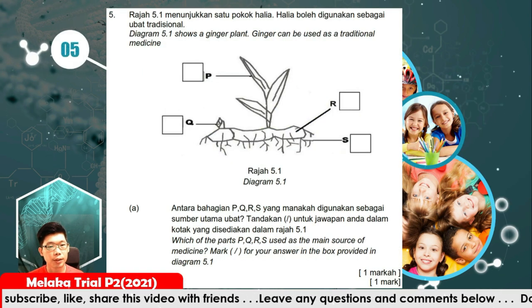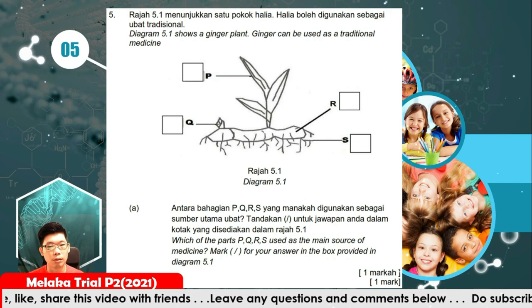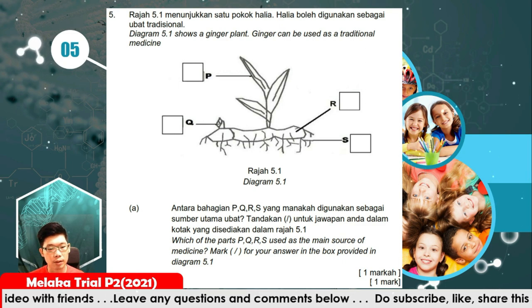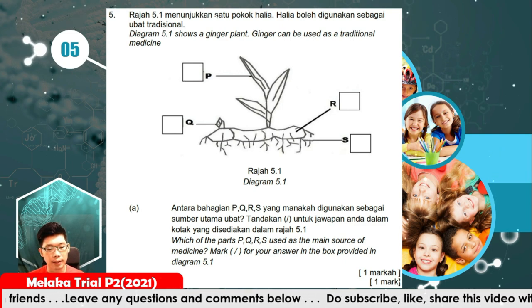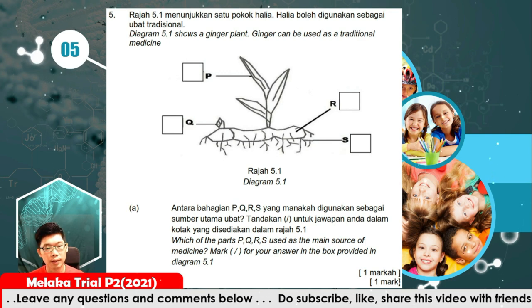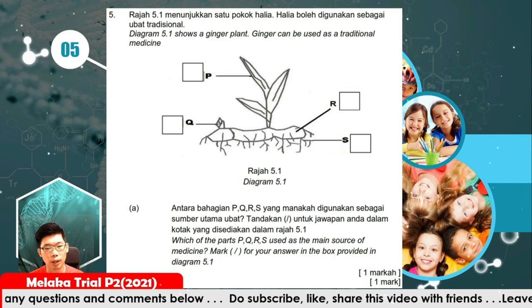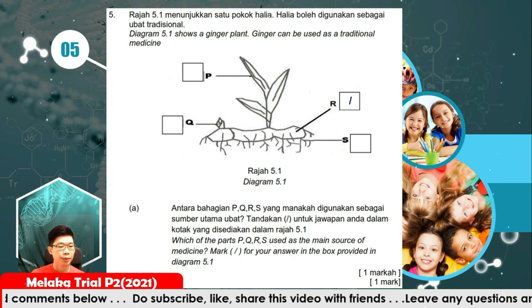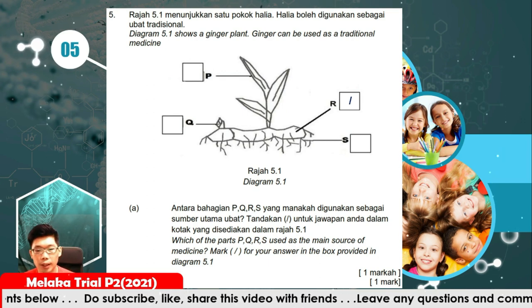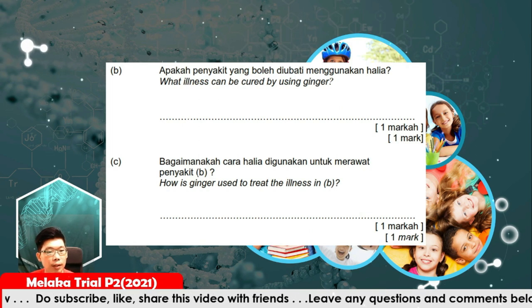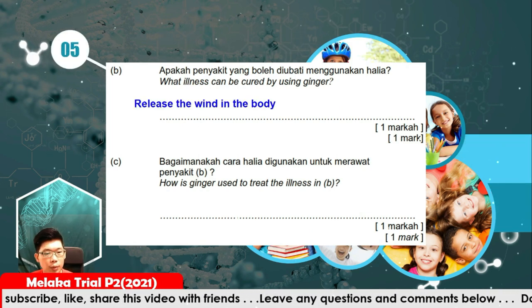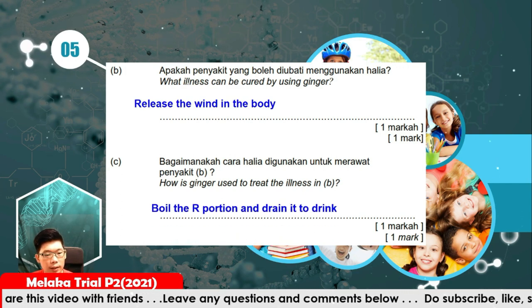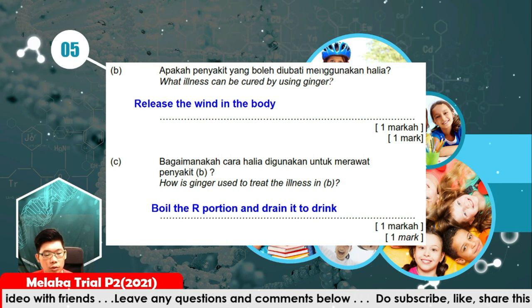Question number 5. The diagram shows the ginger plant. Ginger can be used as a traditional medicine. The part R is used as the main source of the medicine. Ginger can treat the illness of releasing wind in the body. To use it, boil the R portion and drain it to drink.